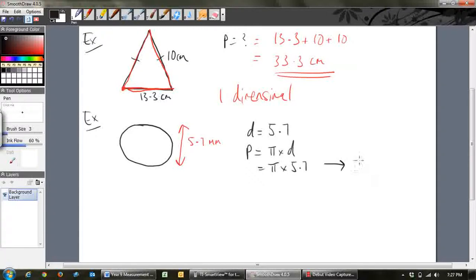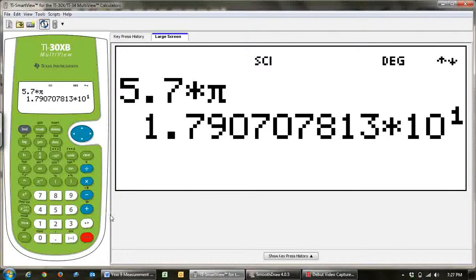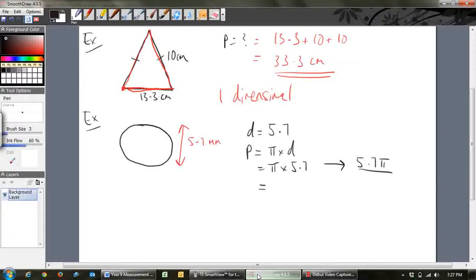Now just note here, if you were to do this in year 10, you would just say 5.7π and that would be your answer. In year 9, or if you asked for an approximate, then just do this on your calculator. So 5.7 times π, enter, and it gives you your answer there. That is 17.9 millimeters, so that's our perimeter there.